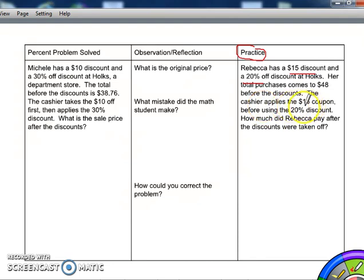The cashier is going to apply the $15 coupon first and then uses the 20% discount second. So how much does she pay after the discounts are taken off? We're going to first take the original money that she started with.